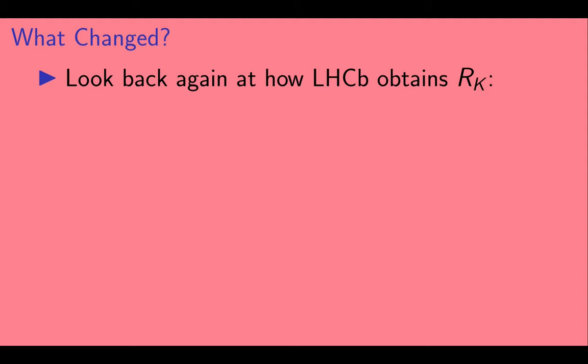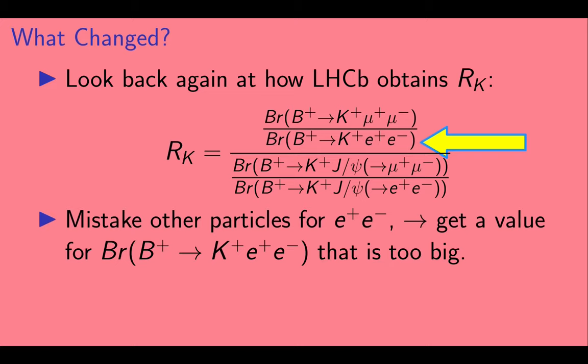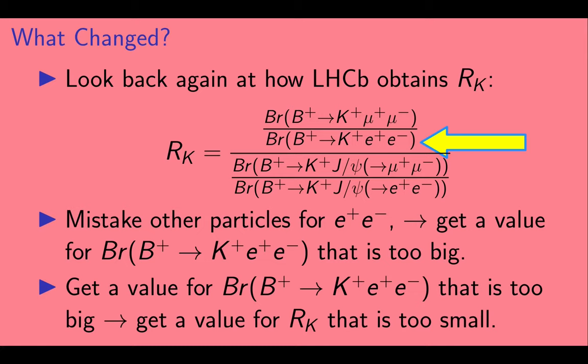So let's look back again at how LHCb obtains RK. Here's their formula. If you mistake other particles for E plus E minus, you can think that a B plus is decaying to modes containing E plus E minus when it's not. So you can get a value for this branching fraction that is erroneously too big. And if you get a value for that branching fraction that is too big, you can get a value for RK that is too small.